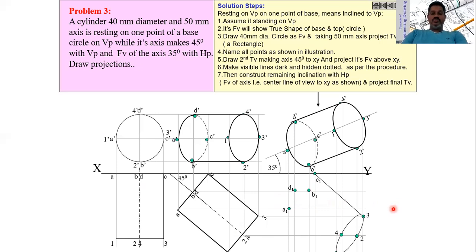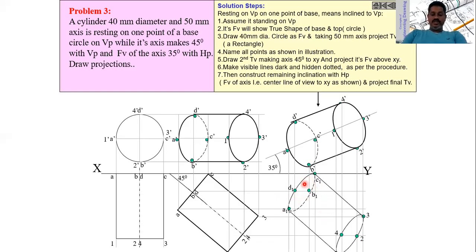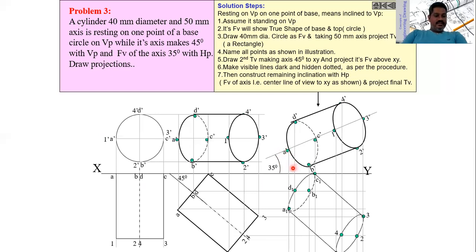Join all the intersection points to get a smooth curve at the top and bottom for both the front view and top view. These are the final projections of the cylinder when one base point is touching the vertical plane, the axis makes 45 degrees with VP, and the axis makes 35 degrees with HP. Thank you — we will discuss one more example in the next session.